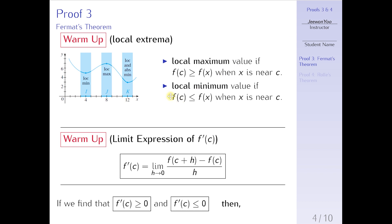Similarly, we say a function f has a local minimum value at c if the y value f(c) is less than or equal to all the y values of x when x is near c. For instance, if you look at this point, it's called a local minimum because the y value of this point is the lowest of all the y values nearby. That's why we say it's a local minimum.